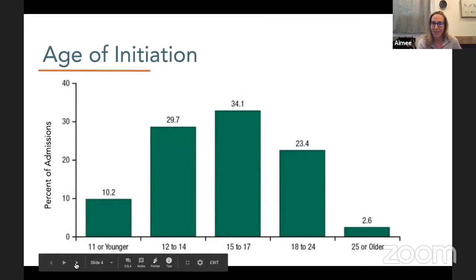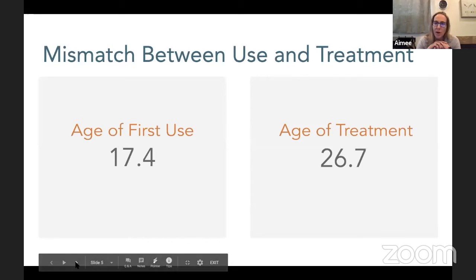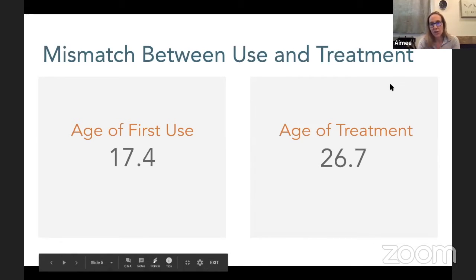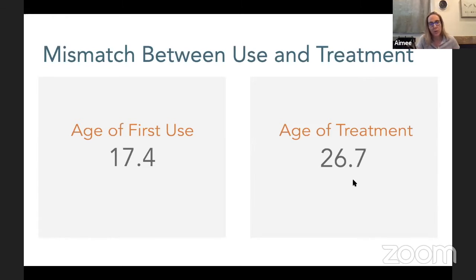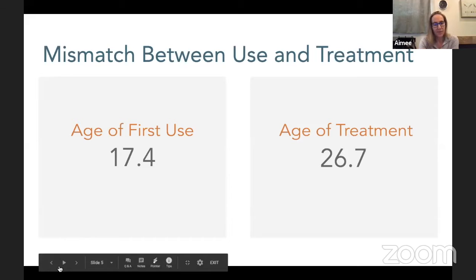Everybody talks about the missing adolescents — we know they're out there, and if we could just reach them earlier we could prevent some of these consequences. The age of first use is around 17, and the age of initiation of treatment is not until 26. That's almost a decade between when someone first starts using and when we finally engage that person in treatment. I call this the lost decade, and I'm hoping we can all partner to bring that number down.